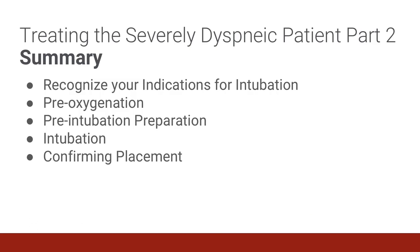In summary, this part 2 of our series reviews: recognizing the need for intubation in a patient not improving despite other modes of oxygenation or noninvasive ventilation; the need for pre-oxygenation to extend the safe apnea time; the importance of preparing equipment as well as the patient for intubation; the procedural steps of endotracheal intubation; and methods for confirming accurate placement of the endotracheal tube.